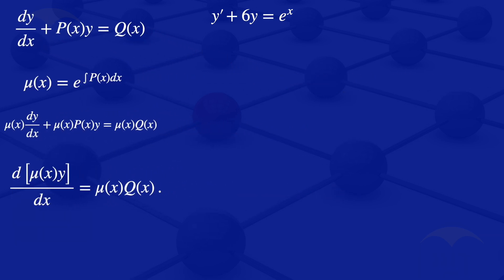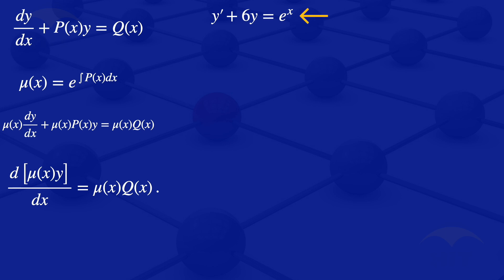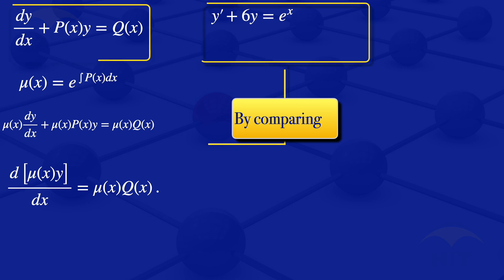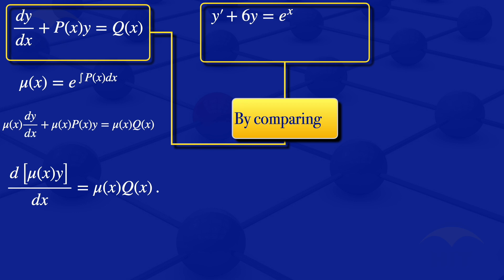Now let's apply that method to the equation we are given. We compare the given equation to the standard form. We can see the given equation is in this form, so by comparison, P(x) = 6 and Q(x) = e^x.